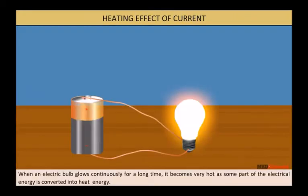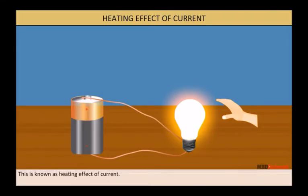Heating effect of current: When an electric bulb glows continuously for a long time, it becomes very hot as some part of the electrical energy is converted into heat energy. This is known as the heating effect of current.